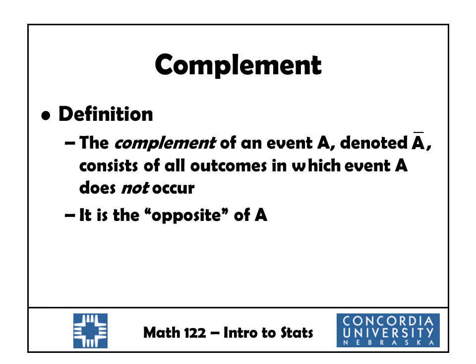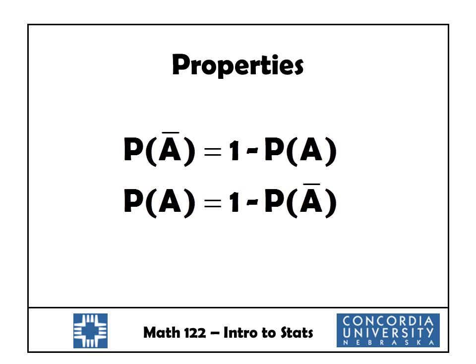Next, we want to go back and review a concept from section 4.2 — the complement. The complement of event A, denoted A-bar, consists of all outcomes in which event A does not occur. Informally, it's just the opposite of A. Complements satisfy these rules: the probability of the complement is 1 minus the probability of the event, and the probability of the event is 1 minus the probability of the complement. These properties are nice because sometimes I want to know the probability of an event A, but that's very difficult to calculate directly. It may be easier to work with the complement, calculate its probability, and then use the second rule to calculate the probability of A.